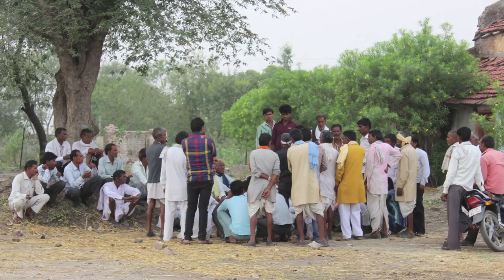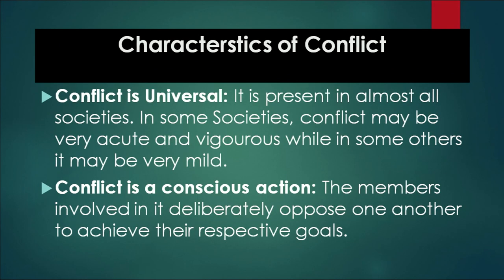When two groups in a village or society come into conflict, the best opinions can emerge from that process, leading to social change in the village or community. Now let us discuss the characteristics of conflict. Conflict is also universal — just as competition is found in all societies, conflict is also found in rural society, modern society, and urban society. So it is universal.